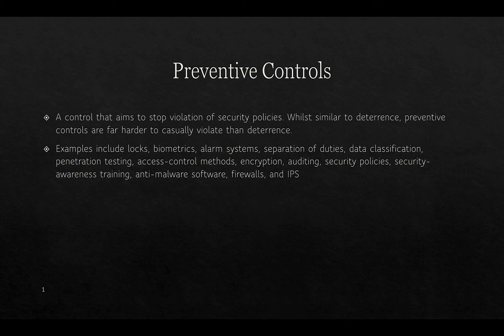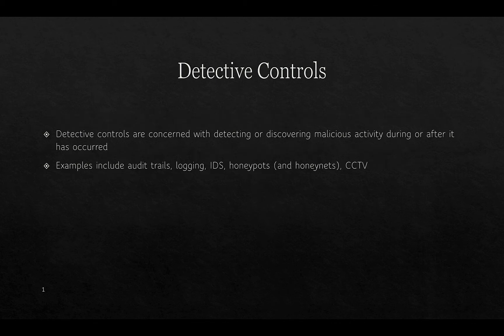It's important to distinguish between preventive controls and deterrence controls. Detective controls are concerned with detecting or discovering malicious activity during or after it has occurred. Examples include audit trails, logging, honeypots and honeynets, CCTV, and intrusion detection systems.